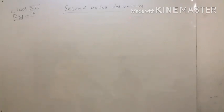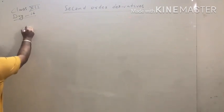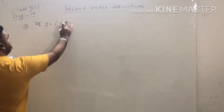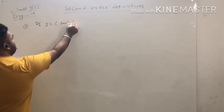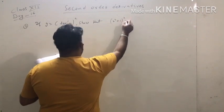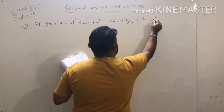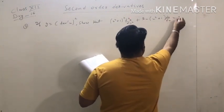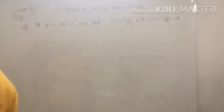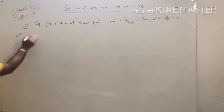Now we check the next similar question. Question number 5: if y equals (tan⁻¹x)², show that (x² + 1)²·(d²y/dx²) + 2x(x² + 1)·(dy/dx) = 2.